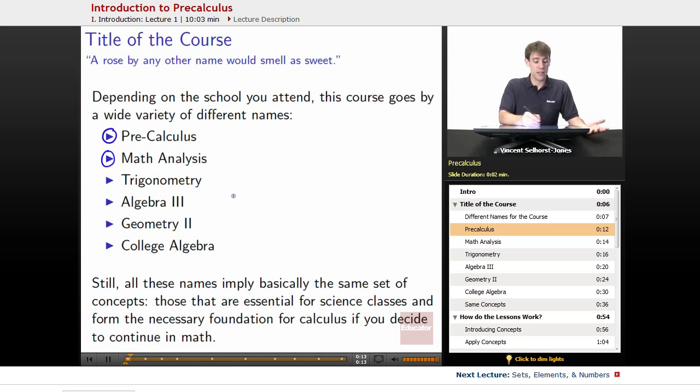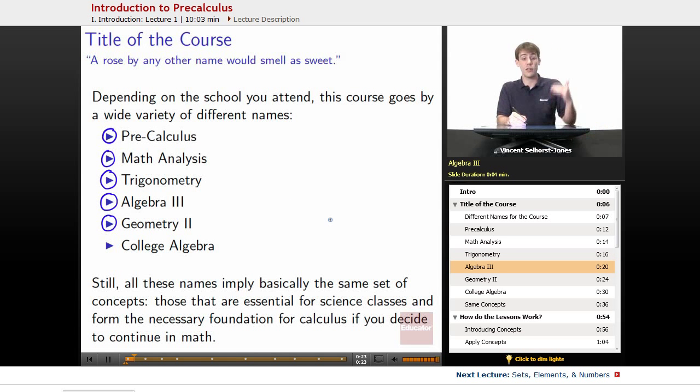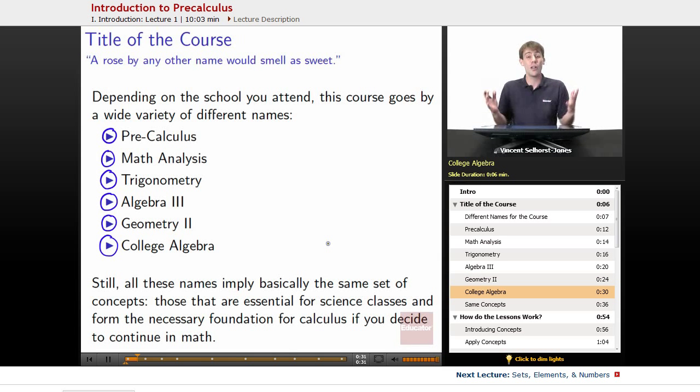Precalculus, Math Analysis, it might be called Math Analysis with Trigonometry, simply Trigonometry, it might be called Precalculus and Trigonometry. It could be called Algebra 3, it might be called Geometry 2, it might be called Algebra 3 and Geometry 2. It might be called College Algebra if you're in a college course, it might be called College Algebra with Trigonometry and it might be called something different from all of these. It's got a lot of names, sadly.